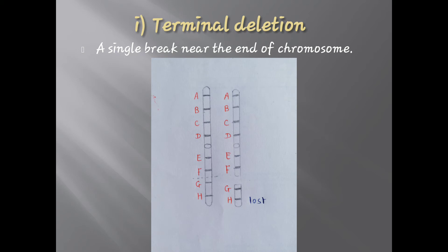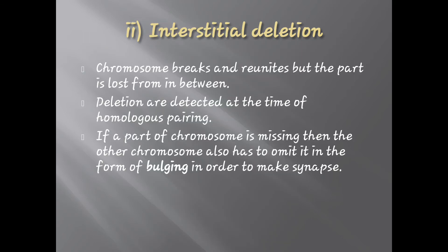As seen in the diagram, a single break occurs between segment F and G, and the broken segment G and H is formed, which will be lost, forming a deficient chromosome. In interstitial deletion, the chromosome breaks and reunites but the part is lost from in between. Two breaks occur within the chromosome — between segment E and F, and F and G — and the segment F, which is without the centromere, is lost, forming a deficient chromosome.